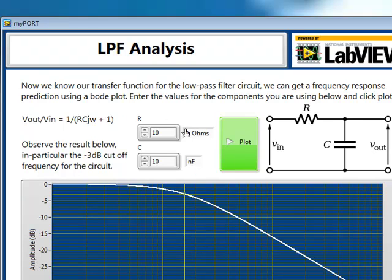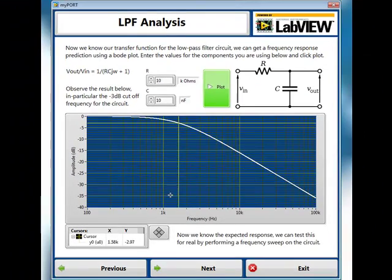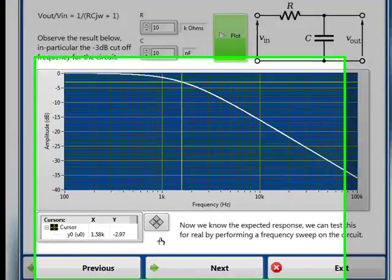So here we're actually plotting, based on the component values, a frequency response against amplitude to see where we'd expect the minus 3 dB cutoff frequency to fall.